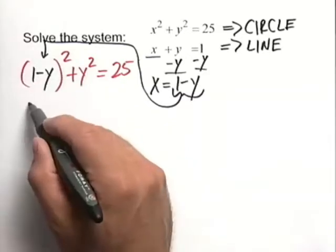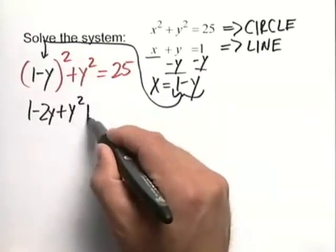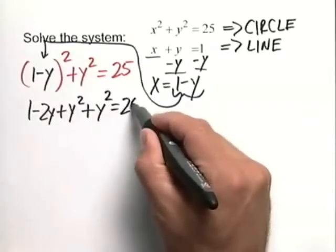So let's FOIL this thing out. We have 1 minus 2y plus y squared plus the existing y squared. That equals 25.